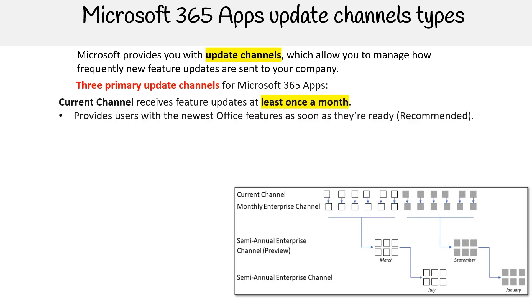The first one is Current Channel, which receives feature updates at least once a month, but there's no exact set schedule. This channel also receives security and non-security updates around two or three times a month. Microsoft recommends this channel because it provides users with the newest Office features as soon as they're ready.